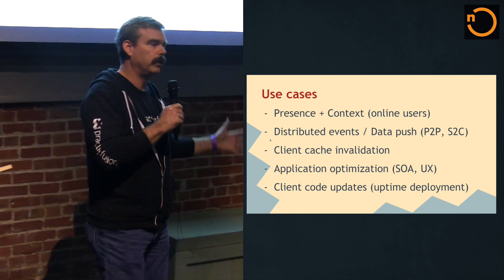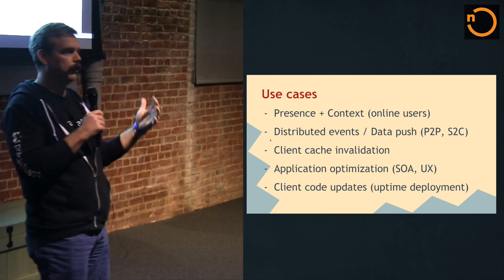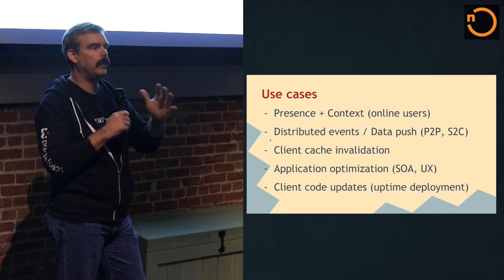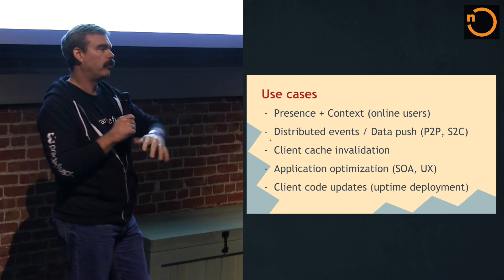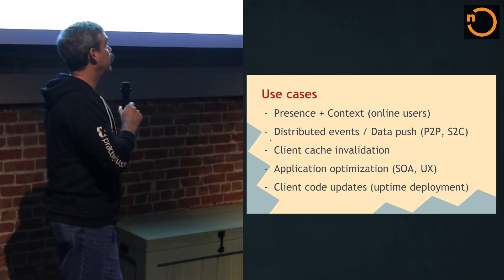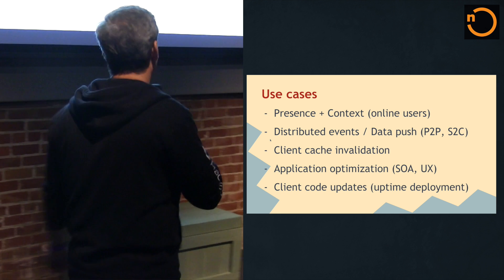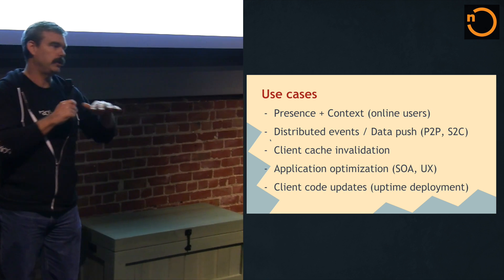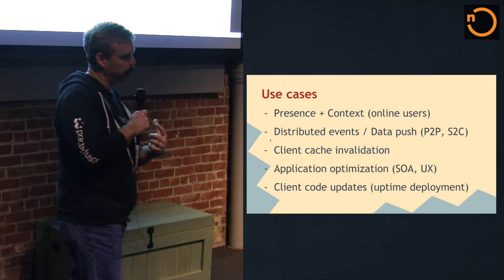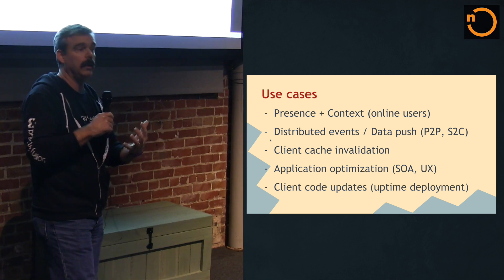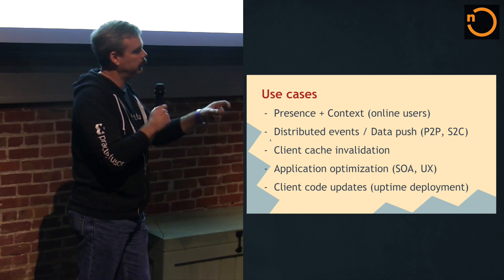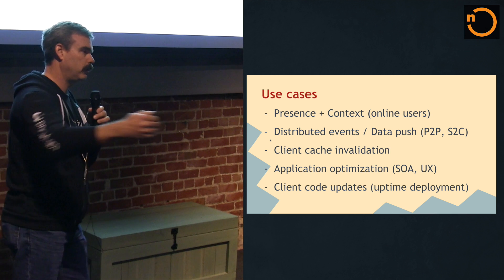This is the most important slide in the deck because there are so many interesting things you can do once you open up real-time capability in your Ember application. You want your application to get the data it needs when it needs it — that's what it does today — but when that data changes due to effects happening outside the Ember application, you want that delivered immediately to provide the best experience for your user. The first use case is presence and context: your existence and current activity within the app is already being exchanged as part of the core protocol.